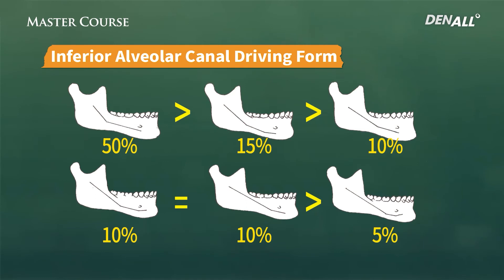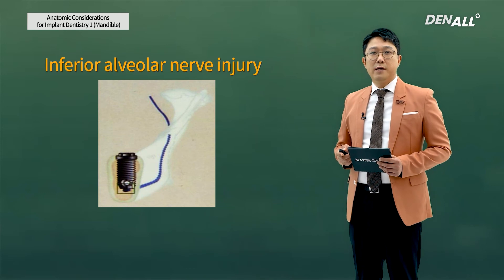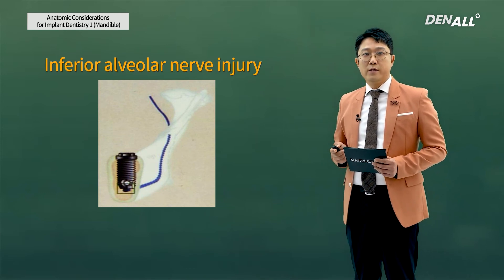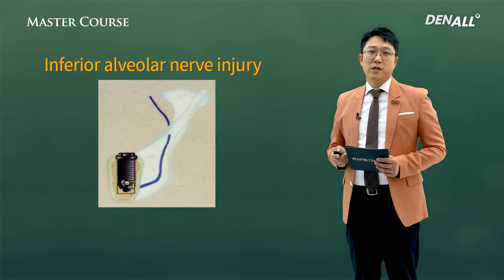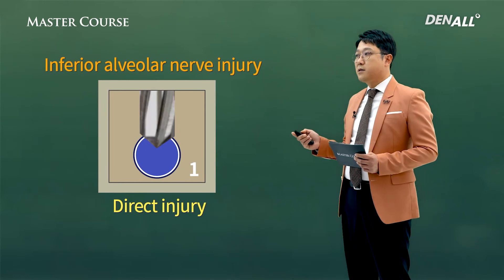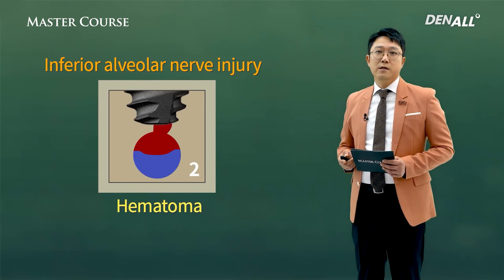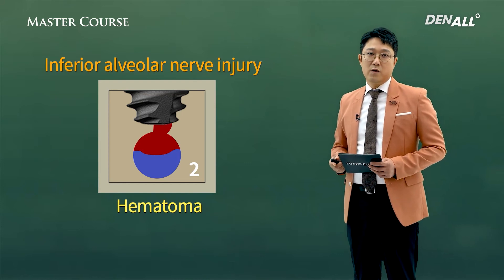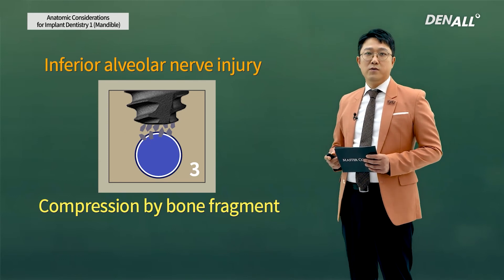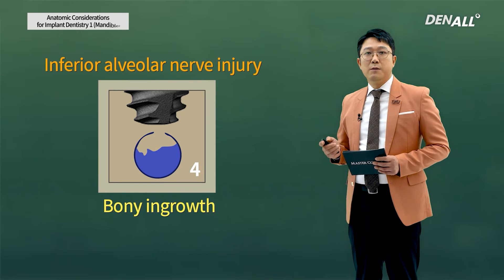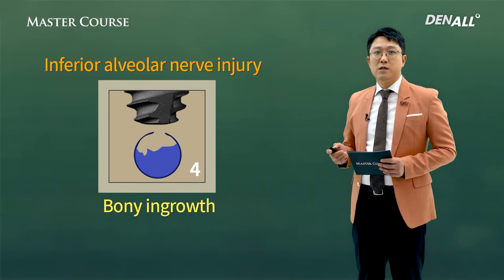The inferior alveolar canal is bent under the third molar, and in 50% of cases it is closest in distance to the root of the second molar. The inferior alveolar nerve runs in the inferior alveolar canal, and when the nerve is injured, it becomes a catastrophic problem. There are many reasons for injury: first, direct injury by drilling; second, thrombosis over the nerve causing compression injury; third, as the implant is placed, bone fragments can compress the nerve; fourth, it is rare, but the site heals and bone grows over the nerve, and the compression from the bone can cause injury.